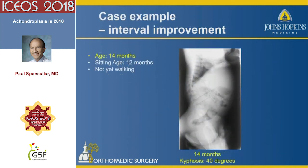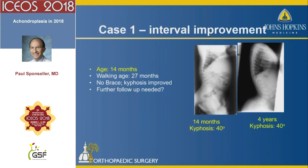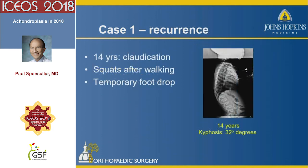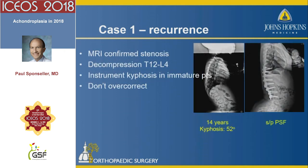Here's an example of a patient who had some interval improvement — a 14-month-old with moderate wedging who started to walk at that time and grew out of it, but had a persistent 40-degree curve. By adolescence, he started to have claudication, squatting after walking, neurogenic claudication, developed a temporary foot drop, and had to undergo decompression and instrumentation.